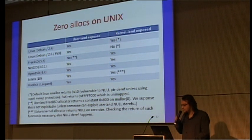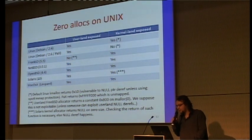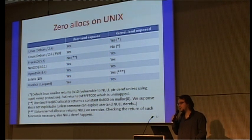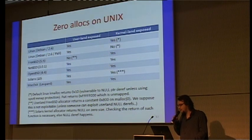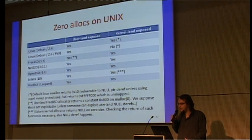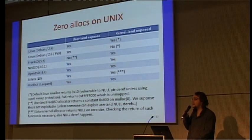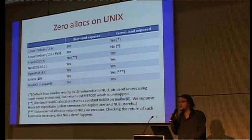All other operating systems are also exposed. On FreeBSD userland, malloc called with a zero size returns a constant of 0x800. This makes zero allocation in FreeBSD userland largely unexploitable — unless you know how to exploit null pointer dereference in userland, which is mostly exploitable in kernel rather than userland.